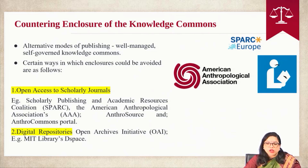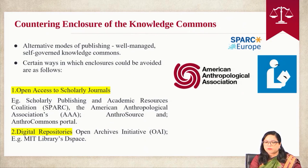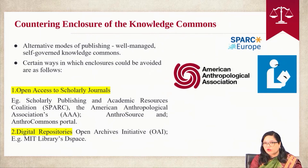Certain ways in which enclosures could be avoided are as follows. Open access to scholarly journals — some examples include the Scholarly Publishing and Academic Resource Coalition (SPARC) founded in 1998 as an alliance of research libraries, universities and organizations; the American Anthropological Association; and the AnthroSource and AnthroCommons portal. The digital repository: in 1999, the Open Archives Initiative was launched by the library community to provide publicly accessible articles in online journals through digital repositories. An example is MIT's digital library space, DSpace, which got a grant of 1.8 million dollars from Hewlett Packard as an open source software platform.